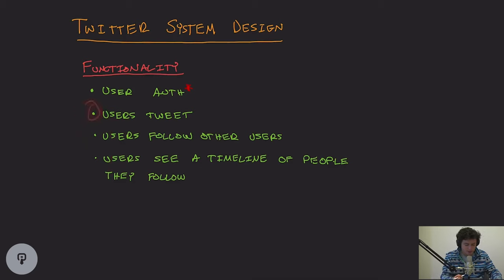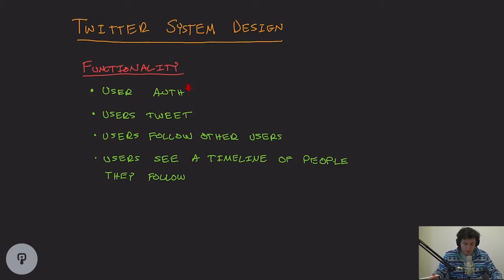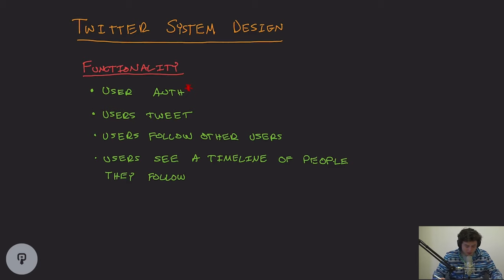Moving on to the second bullet: users need to be able to tweet. I need to be able to input content into the platform and I need other people to see it. Along those lines, I need users to be able to follow other users, so that Bob can follow Mary and see all of Mary's tweets on their timeline. Speaking of timelines, users see a timeline that contains the tweets of the people they follow — so if Mary says 'I'm having a great day,' Bob is able to see that on his timeline because Bob follows Mary.